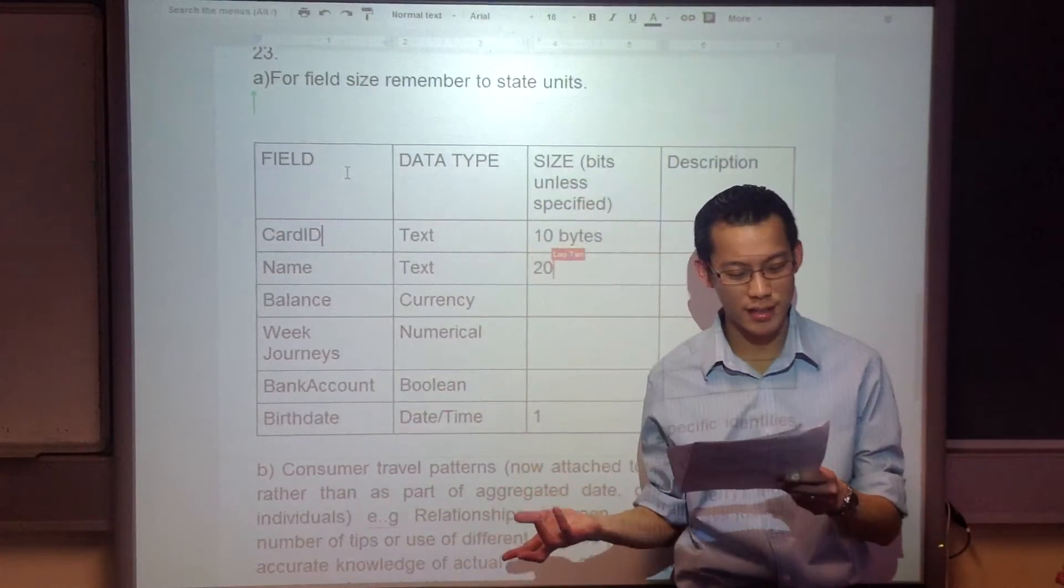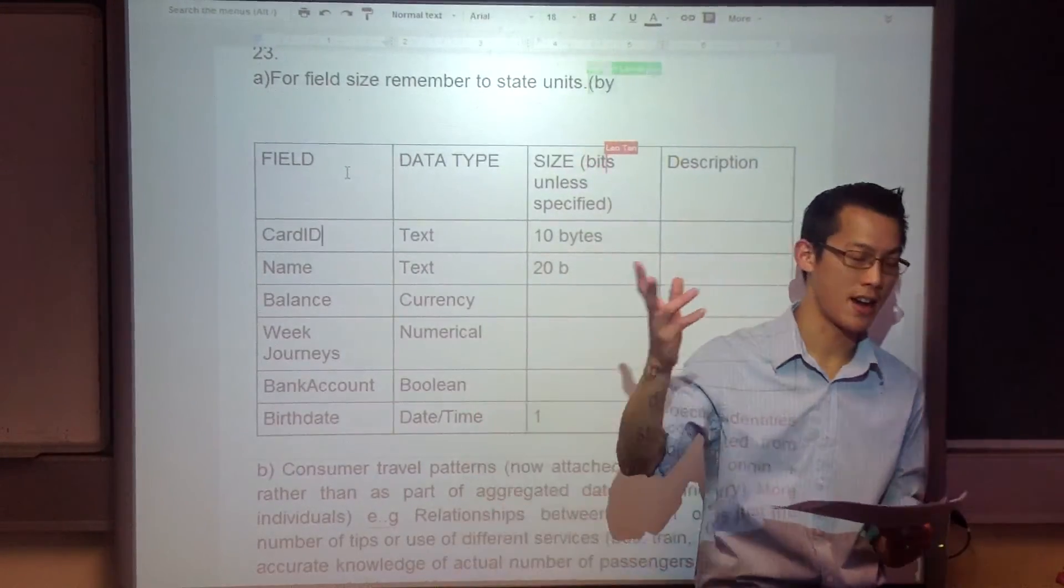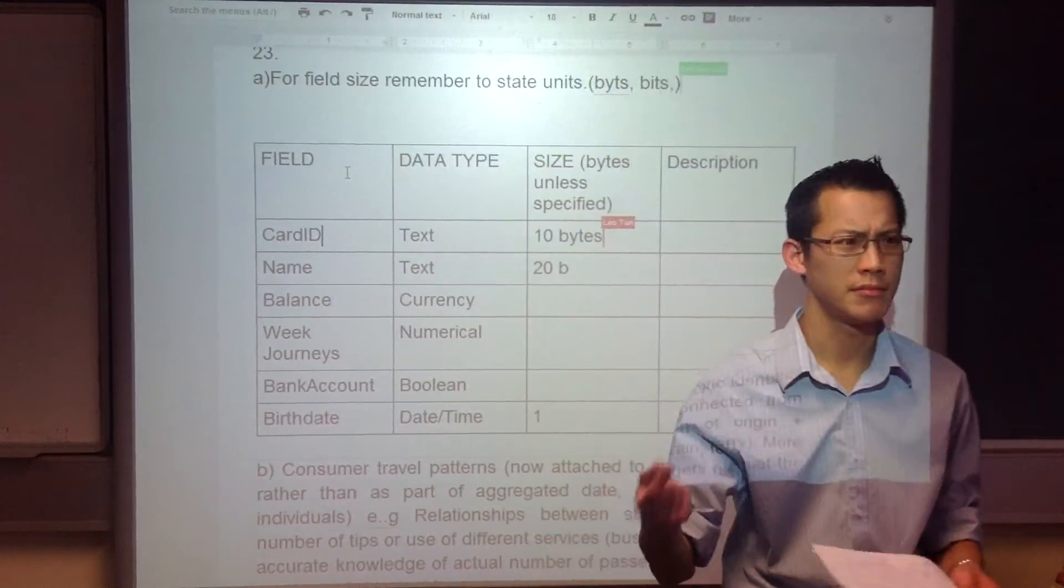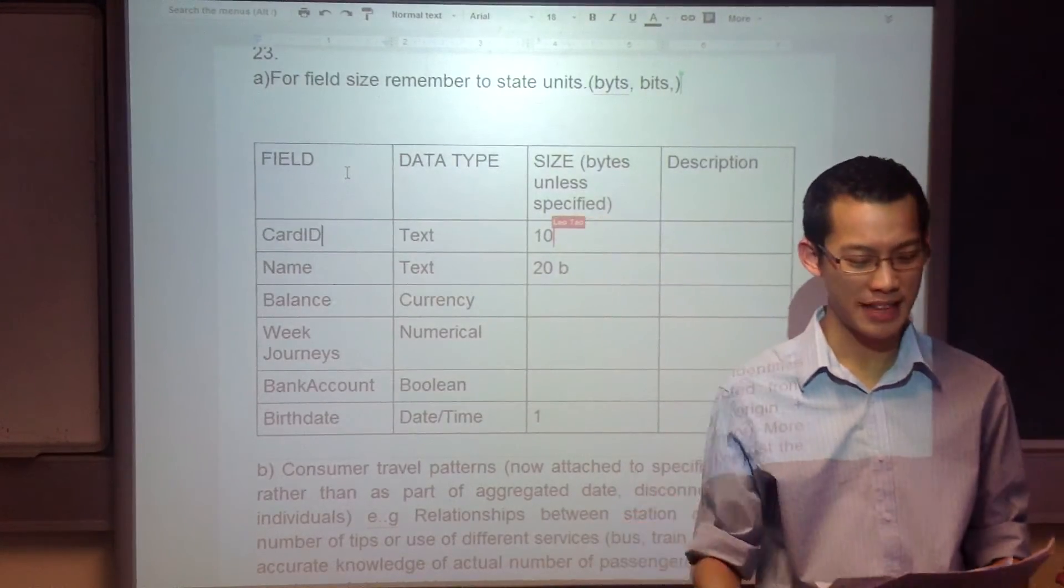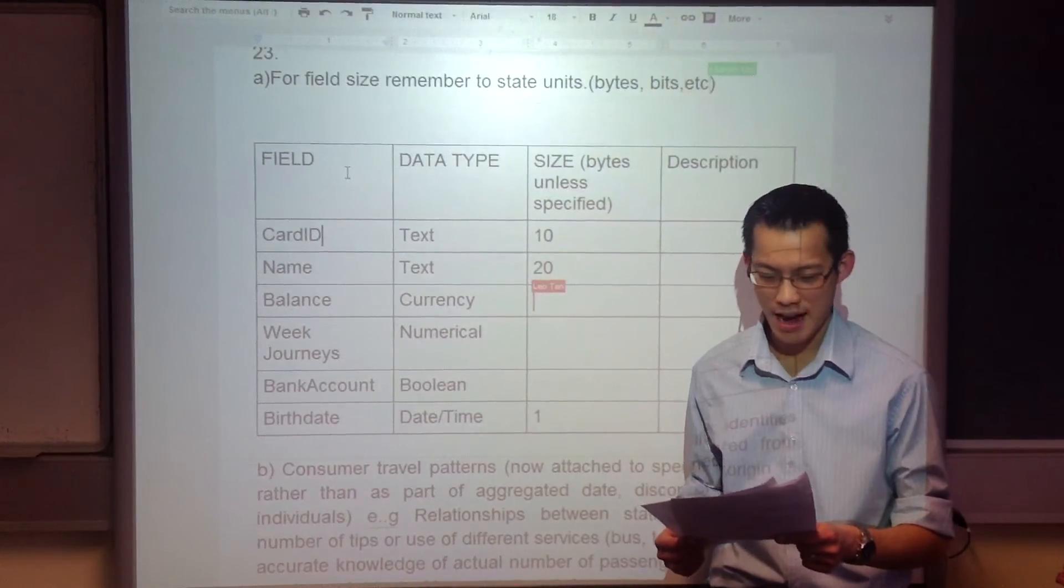Some of you forgot that you had the week's journeys that you know about them, because that way you can give them a discount. So some of you just forgot about that, but that's a crucial piece of information. So that's the field.